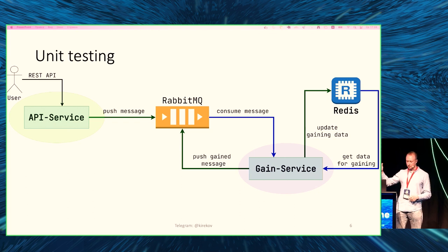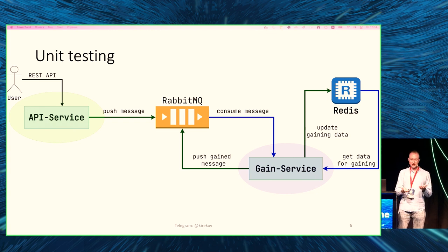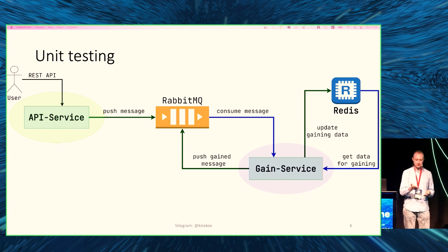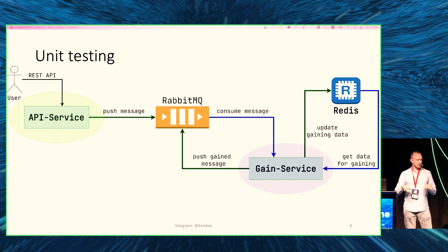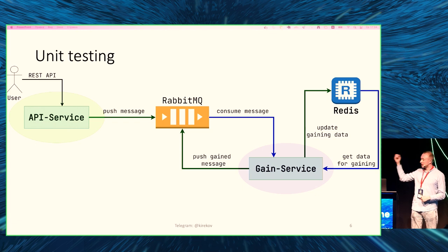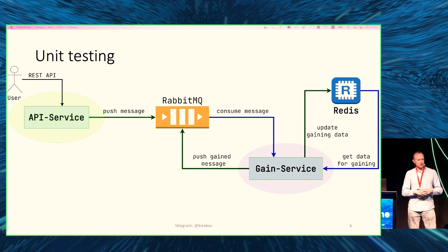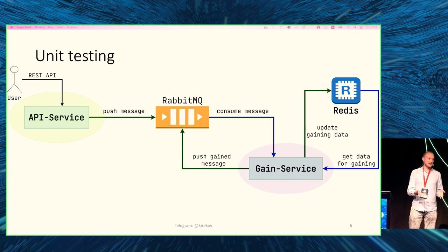Unit testing covers only the services themselves — those purple and green ovals. What are the benefits? They're easy to write, easy to implement, easy to run in parallel. If you hire a junior developer, they're most likely already aware of unit testing. But the main disadvantage is that we don't check actual interactions. When you deploy to any environment — development, staging, production — you don't assume there will be no RabbitMQ or database. That doesn't happen in real life, and we need to validate those behaviors somehow.